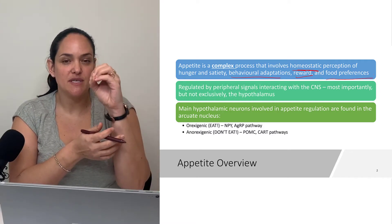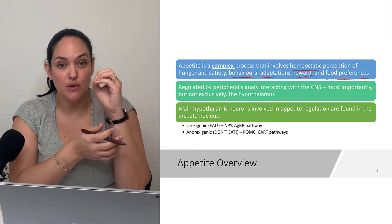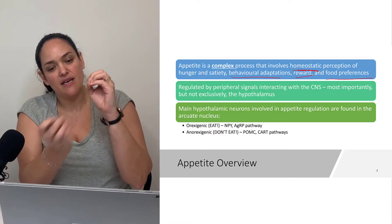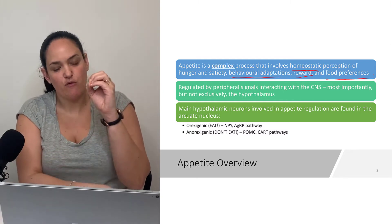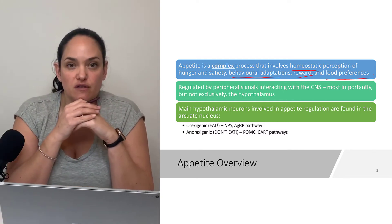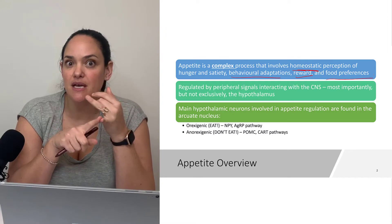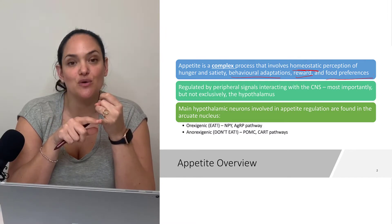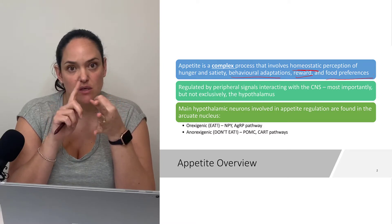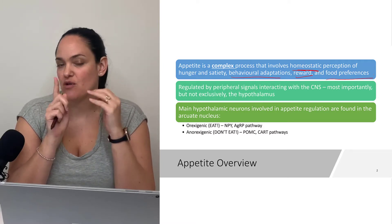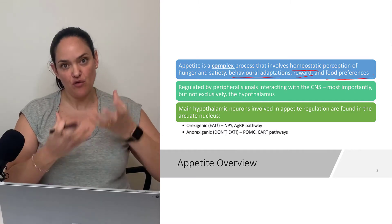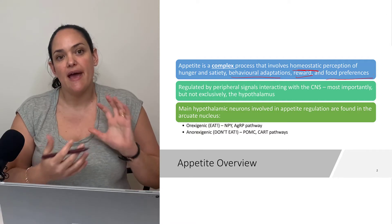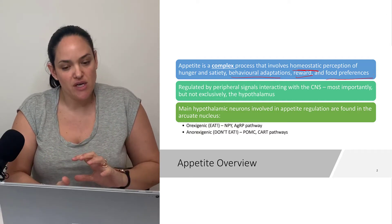The main center of appetite regulation is the arcuate nucleus of the hypothalamus. That area receives input from a lot of different parts of the body. We've looked at the fact that leptin has receptors in the arcuate nucleus, and so does insulin, so does cholecystokinin, so does ghrelin, and a lot of other peripheral signals that basically tell the appetite center what's going on peripherally and whether we need to eat more or eat less.